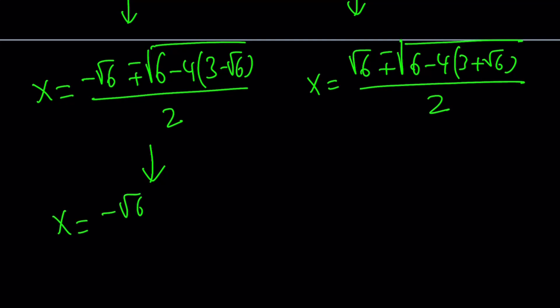So negative square root of 6 plus minus 6 minus 12 is negative 6. Distribute, you get 4 times the square root of 6 minus 6. Square root of that, divide by 2.